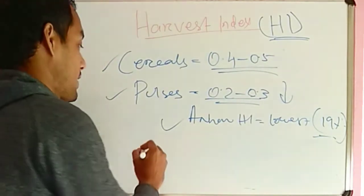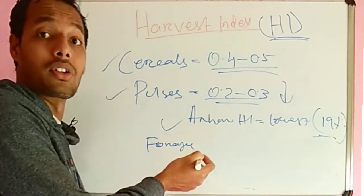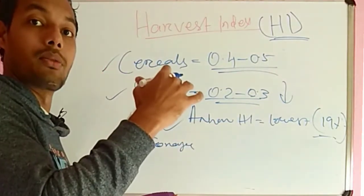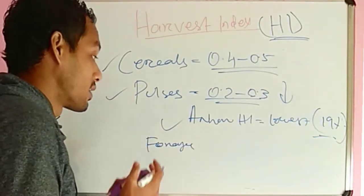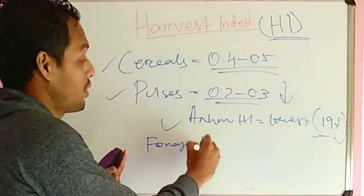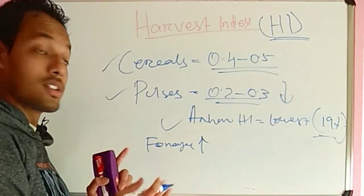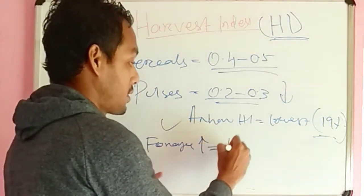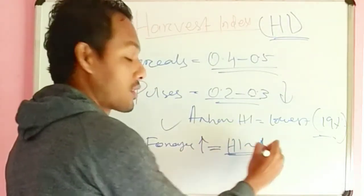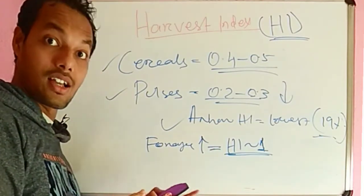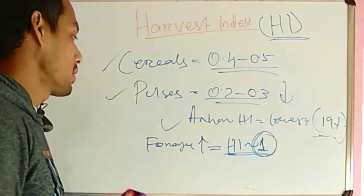A special case: for forest crops or grasses, the whole above-ground part is the economic yield, so economic yield equals biological yield. Therefore, in case of forest crops, the harvest index is close to 1. If this appears in an exam question, select the option 1 for forest crops.